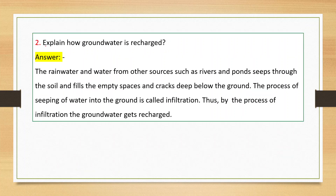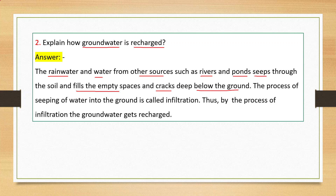Next: explain how groundwater is recharged. Answer: the rainwater and water from other sources such as rivers and ponds seeps through the soil and fills the empty spaces and cracks deep below the ground. This process of seeping of water into the ground is called infiltration. Thus, by the process of infiltration, the groundwater gets recharged.